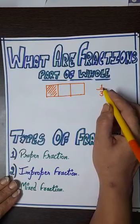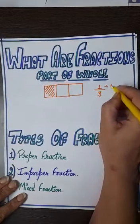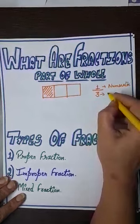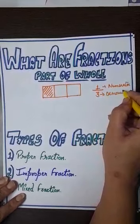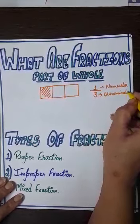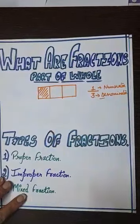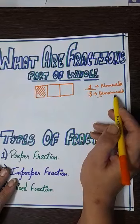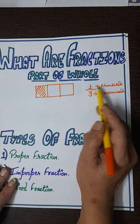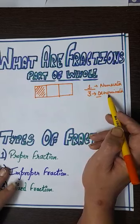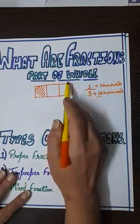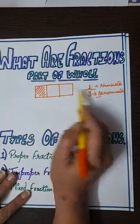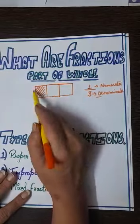The top number is called the numerator and the number at the bottom is called the denominator. As denominator starts with D, D means down — the number written at the bottom is the denominator, and the number at the top is the numerator. So numerator upon denominator is a fraction. Here, 1 by 3 represents one part of the whole chocolate.